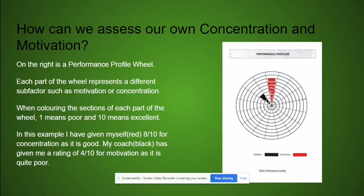How can we assess our own concentration and motivation? On the right is a performance profile wheel. Each part of the wheel represents a different sub-factor such as motivation or concentration. You can see from the wheel that the rating of 1 is poor and 10 is excellent. In this example, I've given myself in the red 8 out of 10 for concentration which is good, and my coach who's shown in black has given me a rating of 4 out of 10 and this is quite poor.